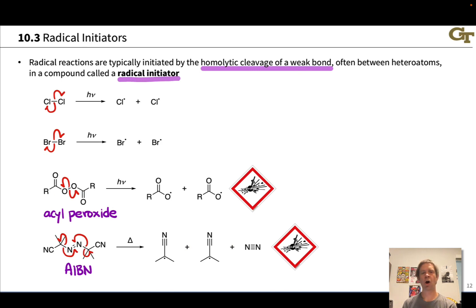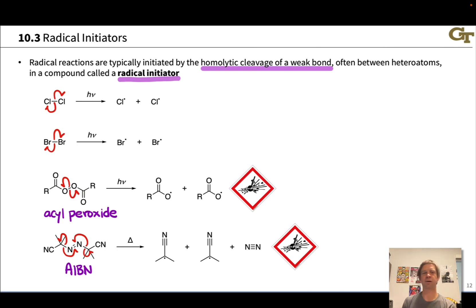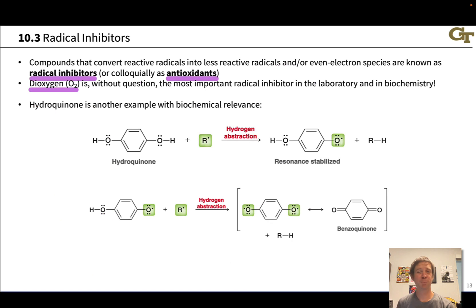In initiation, often these radicals will do something else to generate the key carbon radicals. For example, AIBN might abstract a hydrogen or something like that to kick off propagation.